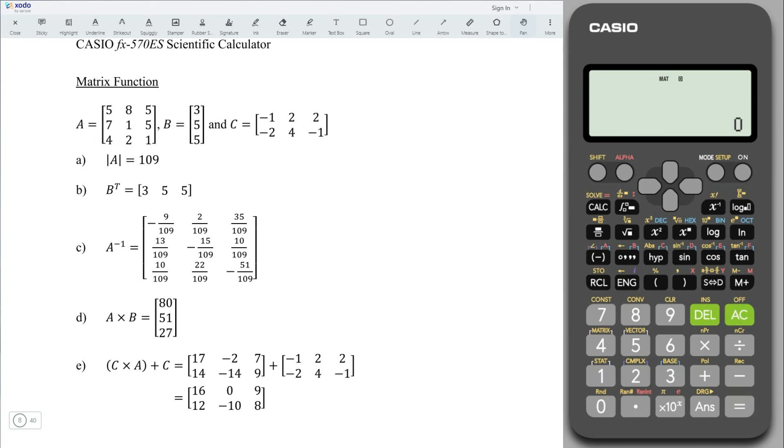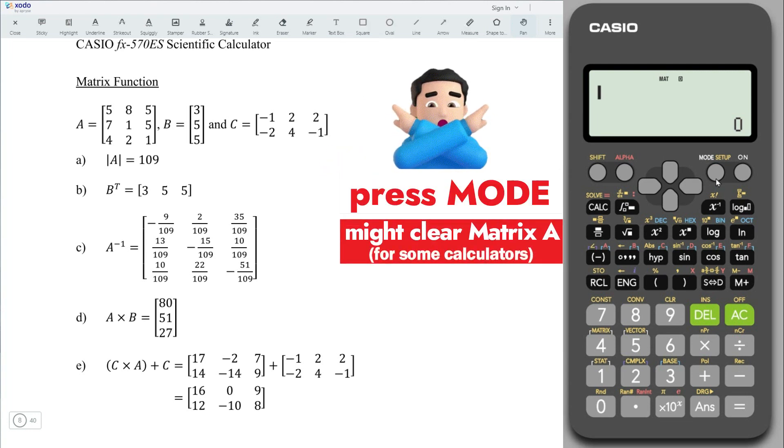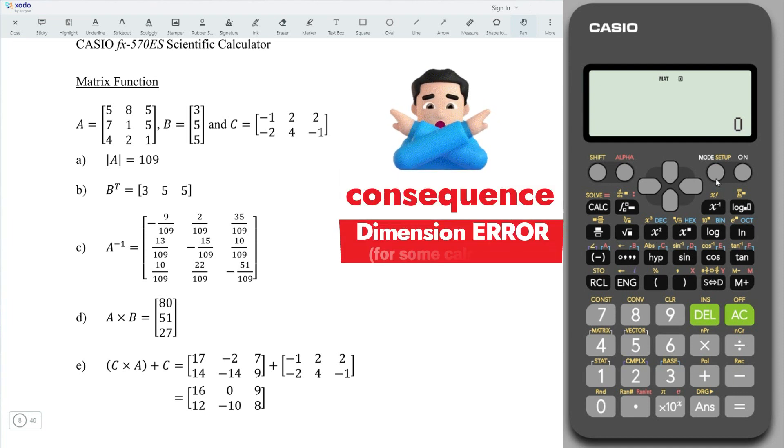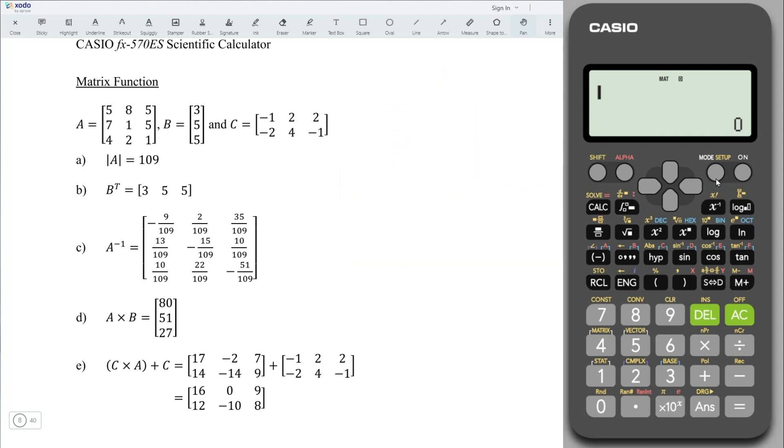Press on AC and proceed to matrix B. To enter the second matrix and onward, do not press on mode, since for some calculators, this would reset the matrices that we have entered previously. The correct method is by pressing shift 4. Select 1 to define matrix. This time, we need matrix B. Press on 2. And this is a 3 by 1 matrix. Select 3.